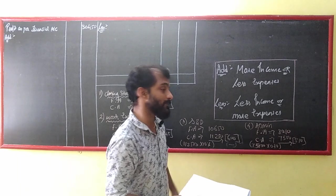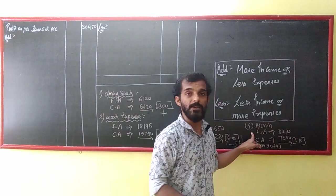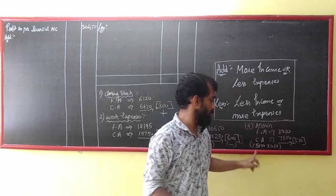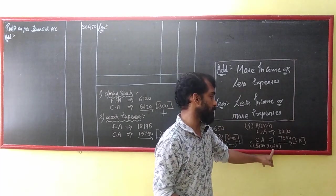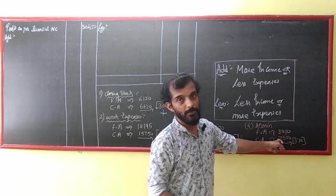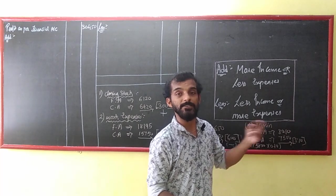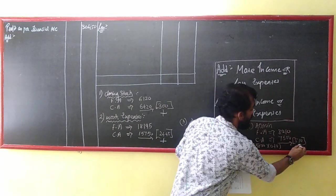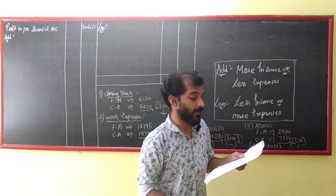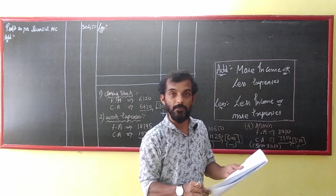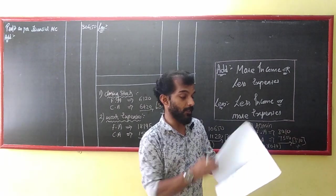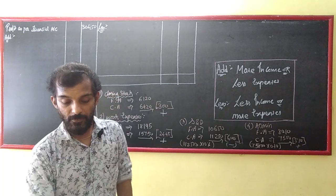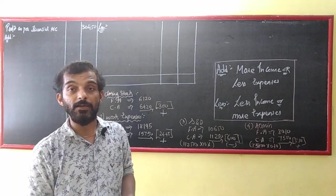Administrative expenses in FA are 8,010 but in cost they are 0.10 per unit — 75,000 units gives 7,500 — so cost has less expense; the difference is 510, which we add. Depreciation: in FA it is 1,650, in cost it is 1,200 — difference is 450. Cost has less expense, so we add 450.